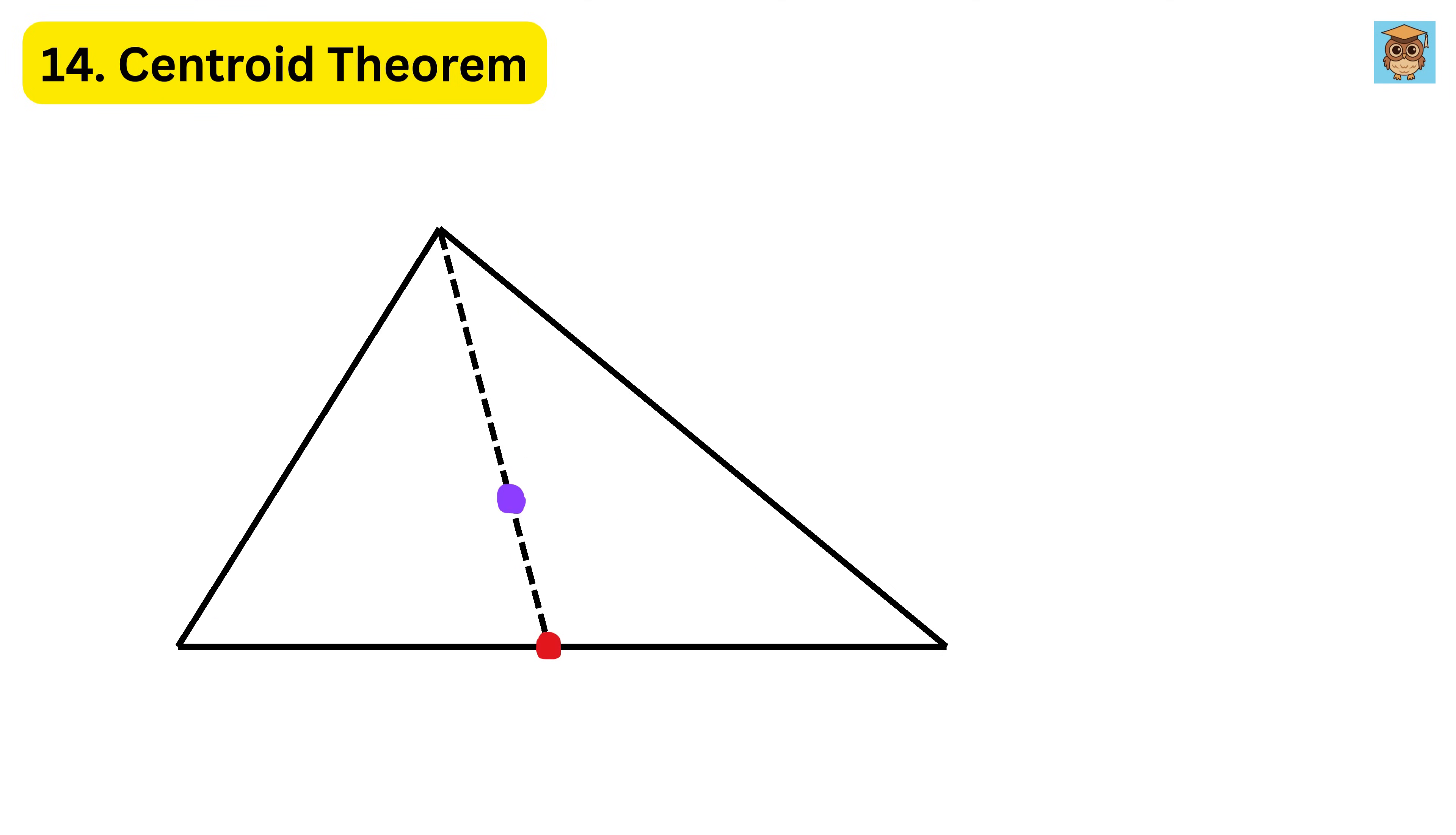Another interesting fact is that the centroid always divides each median into two parts, with the longer part being twice the length of the shorter part. Suppose a median in a triangle is nine centimeters long. The centroid will split it into three centimeters, which will be from the centroid to the midpoint of the opposite side, and six centimeters, which will be from the centroid to the vertex. The ratio of the two parts is always one to two, no matter what the triangle looks like.